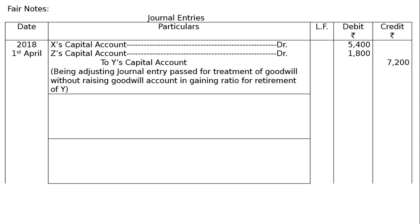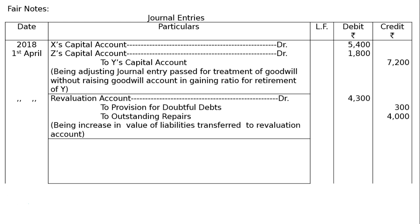Goodwill is 21,600; Y's share is 2/6 = 7,200. X and Z debit in gaining ratio 3:1. Next entry: revaluation account debited 4,300, to provision for doubtful debts account 300, to outstanding repairs account 4,000. Narration: being increase in value of liabilities transferred to revaluation account.